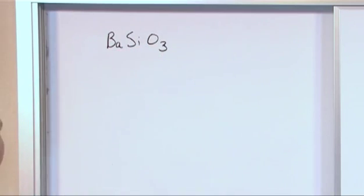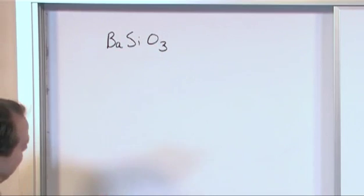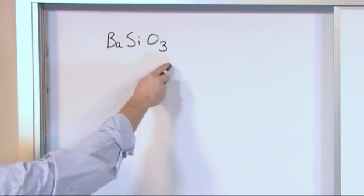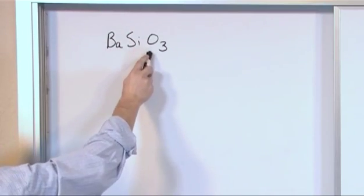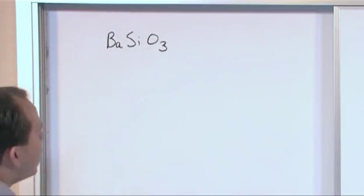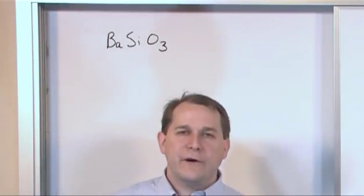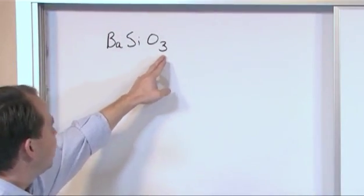And what we want to know is, what is the percent composition by mass, when we say percent composition we're talking about by mass, of barium in this compound? What is the percent composition of silicon in this compound? What's the percent composition of oxygen in this compound? Now, like I said before, there's really two variables here. Obviously there's more atoms of oxygen.